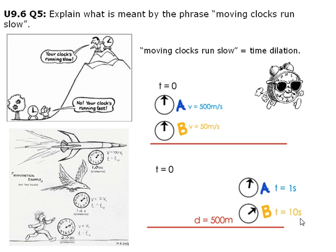What this means is that if one is observing in a moving frame like A, the events would occur at normal speed. But if one is to look at the event from a rest frame such as B, the actions appear in much slower motion. And that is why moving clocks run slow.